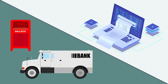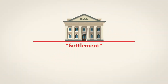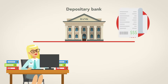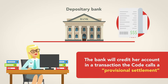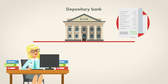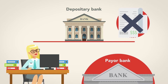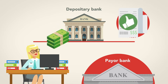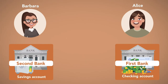During check collection, one very important concept is settlement. When a customer deposits a check into her account at the depository bank, the bank will credit her account in a transaction the code calls a 'provisional settlement.' Provisional in this case means temporary. A provisional bank settlement can be revoked by a bank anytime prior to final settlement by the payer bank. Once the payer bank makes final settlement by paying the check, the provisional settlements become final.